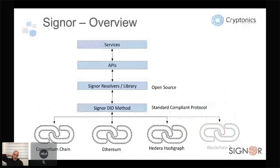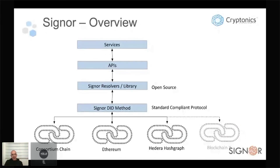Before I finish, I want to explain how SIGNO is structured. Right now we're using Ethereum-based smart contracts, but they're extremely light smart contracts and we could really use any blockchain for this. Then we have the standard-compliant protocol, which is open source and public, with a number of libraries. Things on our GitHub are fairly alpha version right now, and some of it is not open source yet because we're still working on it, but all the protocol level will be open source. On top of this there'll be a number of APIs which can be used to build services.